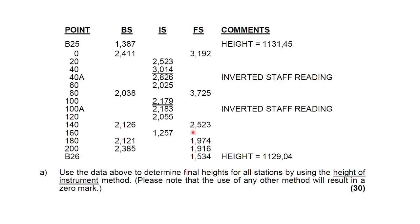So this is the example I'm going to use. These are the points. Take note, there are two benchmarks at two different heights. Then we have chainages from 0 to 200 at 20 metre intervals as you can see according to the points. And you can see we also have two inverted staff readings. And then as usual we have our backsights, intermediate sights and foresights.